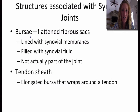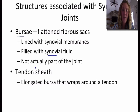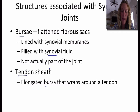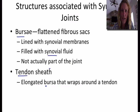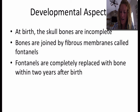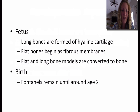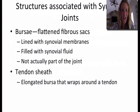A couple of structures also associated with synovial joints: the first is a bursae, which is a flattened fibrous sac. A bursae is lined with synovial membranes and also filled with synovial fluid, but it's not actually a part of the joint. And then we have a tendon sheath, which is an elongated bursa that wraps around a tendon. We'll look at these in lab as well.